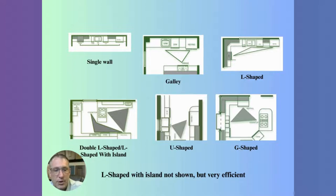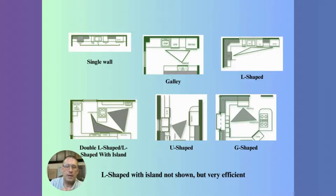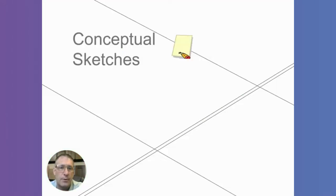These are different shapes of kitchens that are very common. Single-wall kitchens are often found in studio apartments. Galley kitchens appear in condos and smaller homes. L-shaped kitchens without an island are also for smaller spaces. As you get into U-shaped, G-shaped, or L-shaped with an island, you're usually in bigger spaces. L-shaped with an island is not shown here but is a very popular layout. Double-L-shaped is a little unique, and G-shaped is also common. Feel free to drop questions in the comments about your particular kitchen shape.